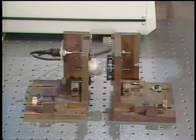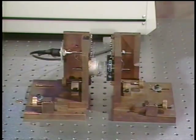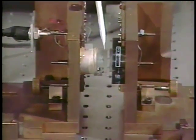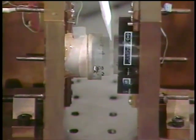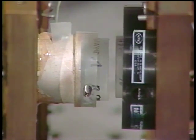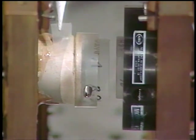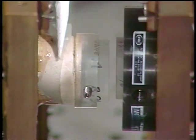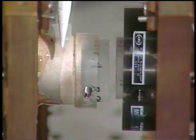If we take a close look at the cavity, you can see that it's made up of two plane mirrors. The spacing between them is only about three and a half millimeters or so. And one of the mirrors is attached to a piezoelectric crystal over here so that we can change the length of the cavity by simply applying a voltage to the piezoelectric crystal.